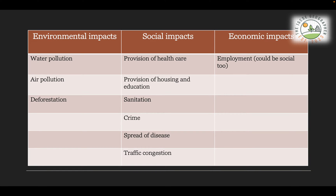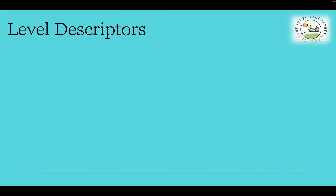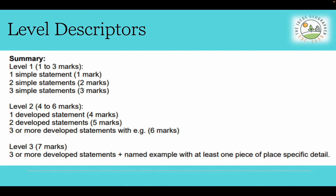As you can see on the left-hand side, we have various environmental impacts; the central column looks at the different social impacts; and the far right column looks at the different economic impacts. To achieve a Level 3 and get full marks in this question, your answer must include at least three developed statements and include a named example — the named example we're looking at today, of course, is Nigeria.